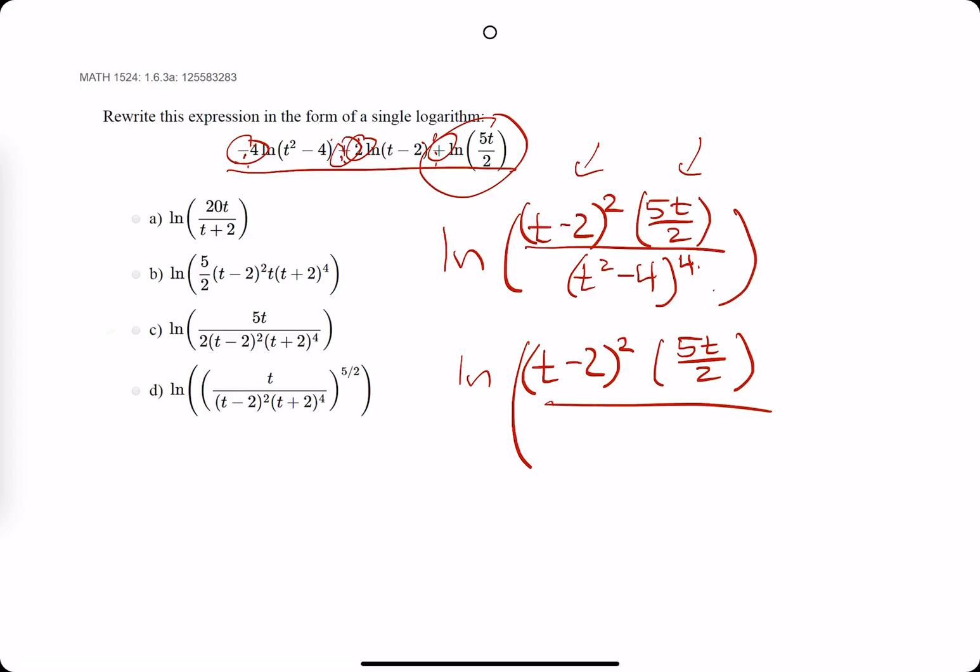On the bottom, now we'll have t plus 2, t minus 2, and back here, we had a 4 exponent on the t squared minus 4. So, that means t plus 2 and t minus 2 both get a 4 for their exponents.